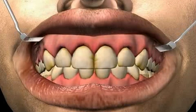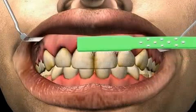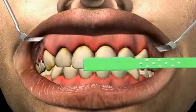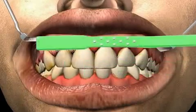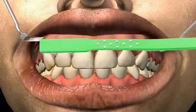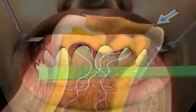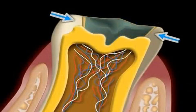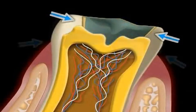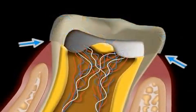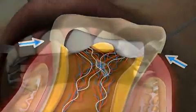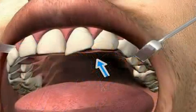Subsequently, it's very important to remove plaque thoroughly from the teeth surface. However, you will not be able to do this if you have overhanging fillings, leaking fillings, overhanging bridge or crown edges, or if you have interlacing teeth, caused by crowded teeth, for example.